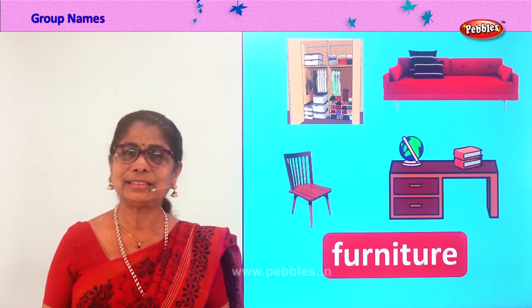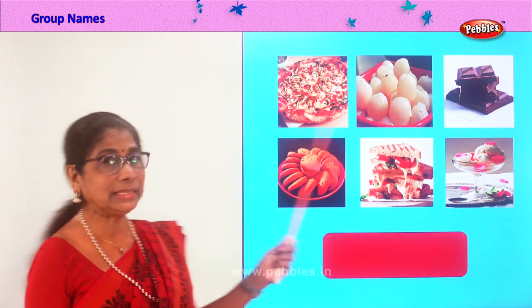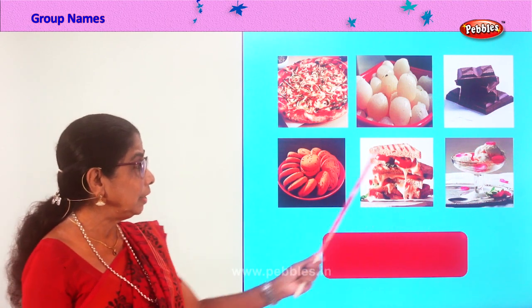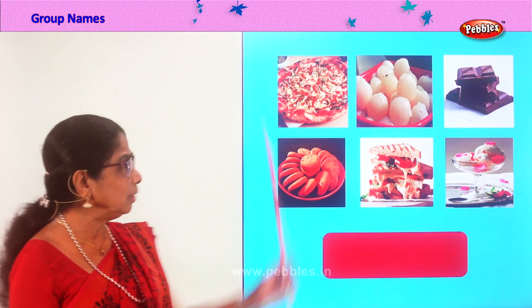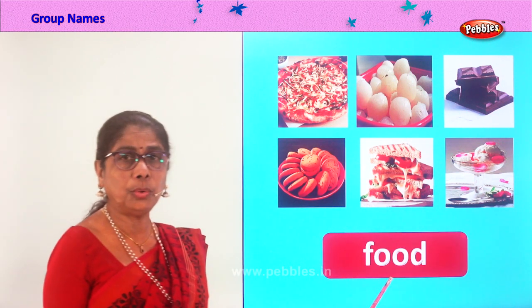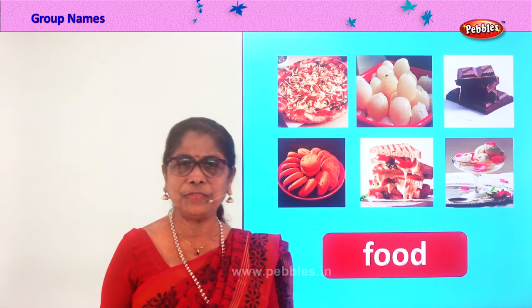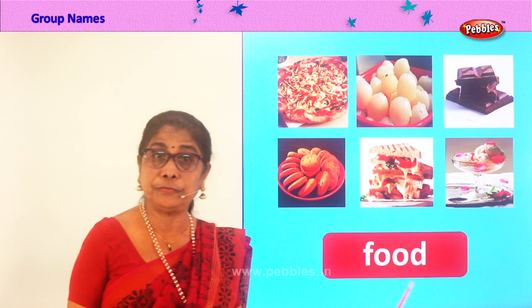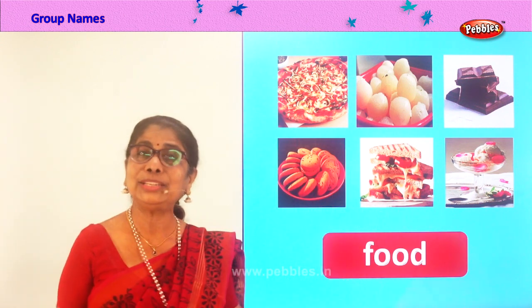Are you enjoying, children? Shall we find another group? Look — all your favourites! You have pizza, sweets, chocolates, ice cream, biscuits. What is the group name for all this? Food! Spell food: F-O-O-D. Different types of food. Which is your favourite? Ice cream! I am sure you love to eat ice cream and chocolate and sweets and all sorts.